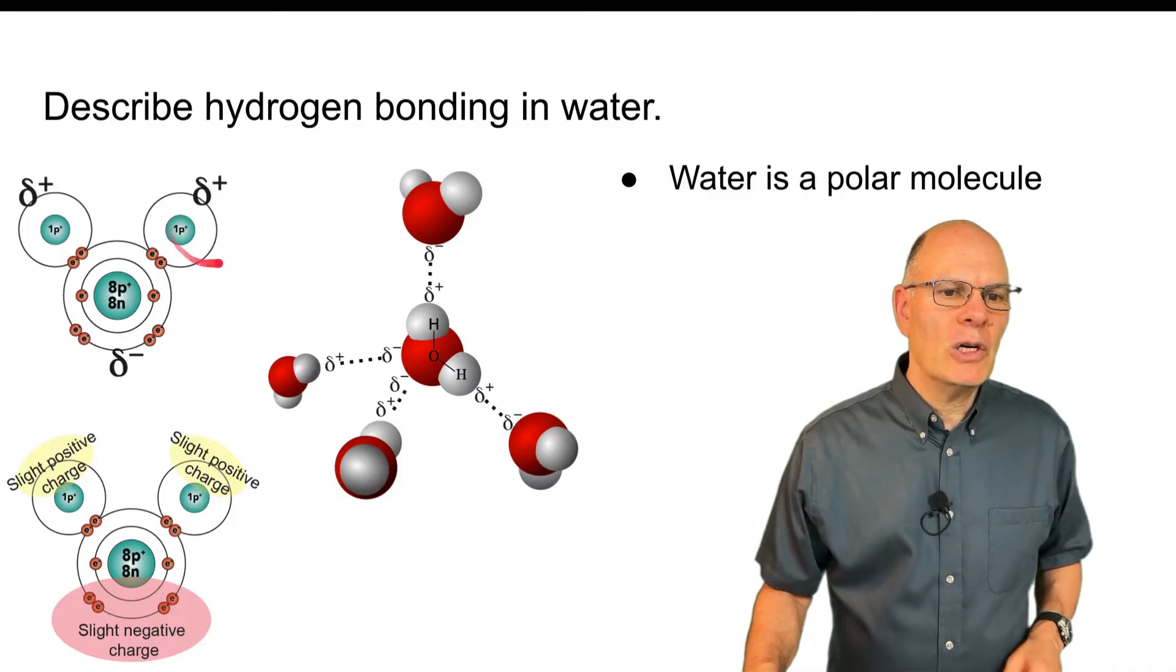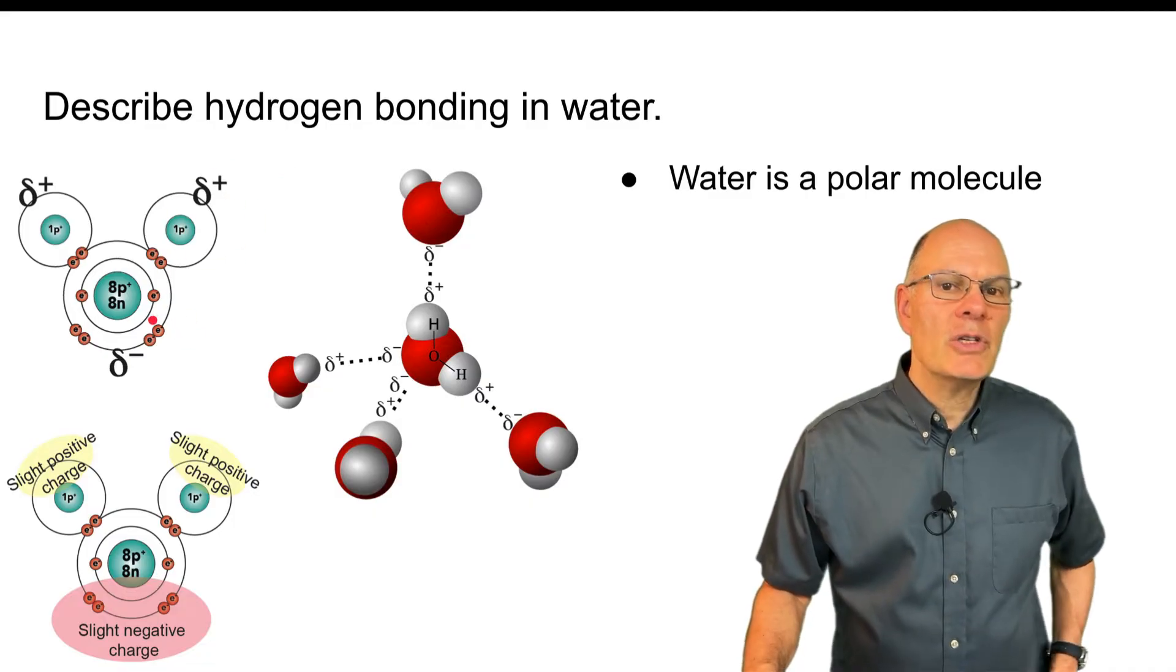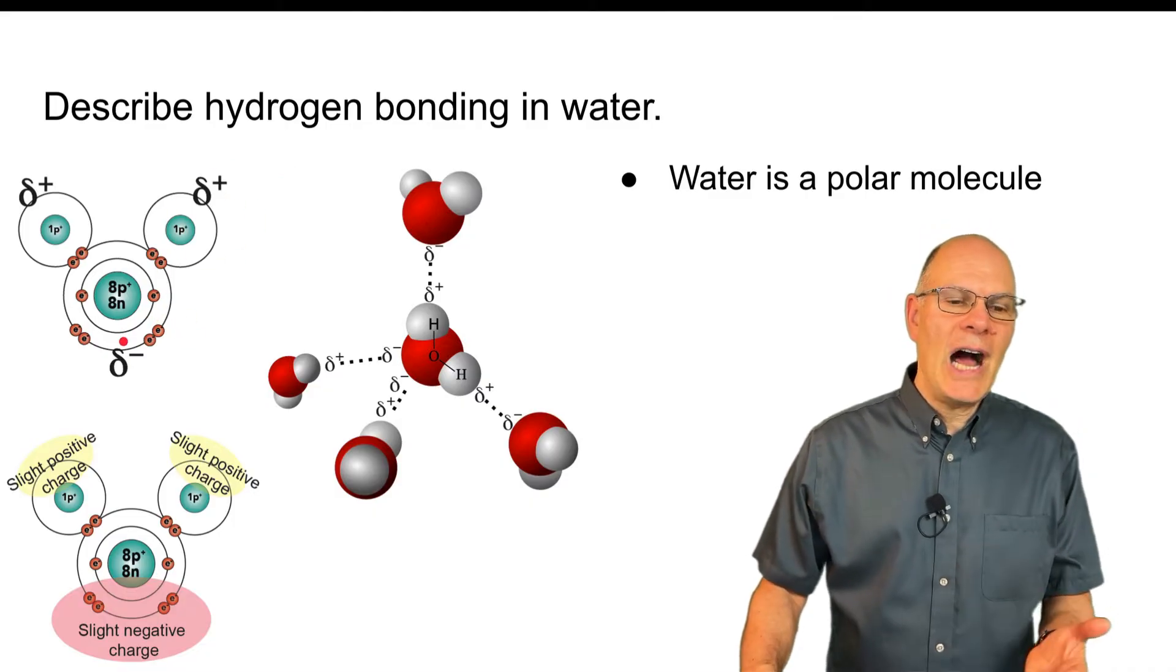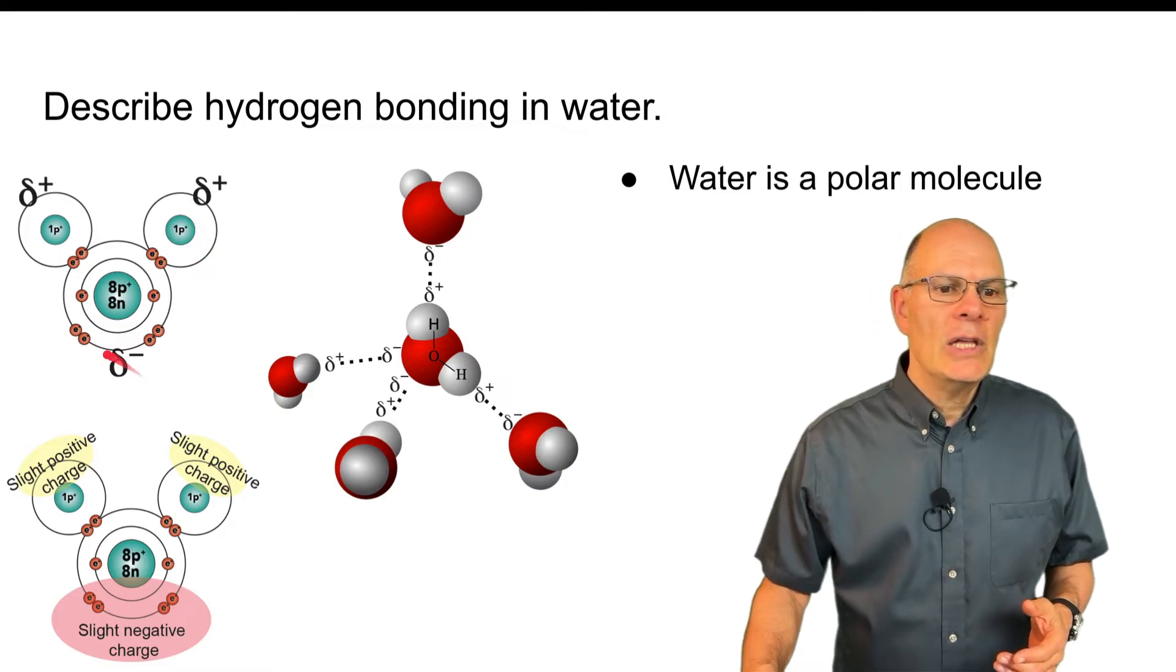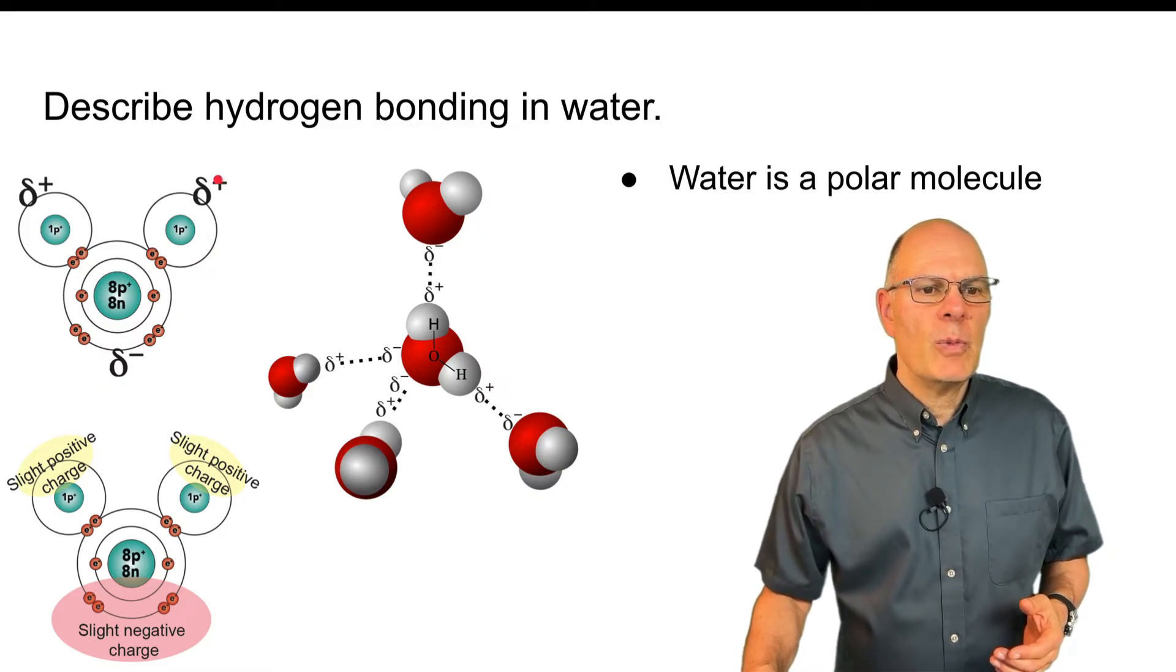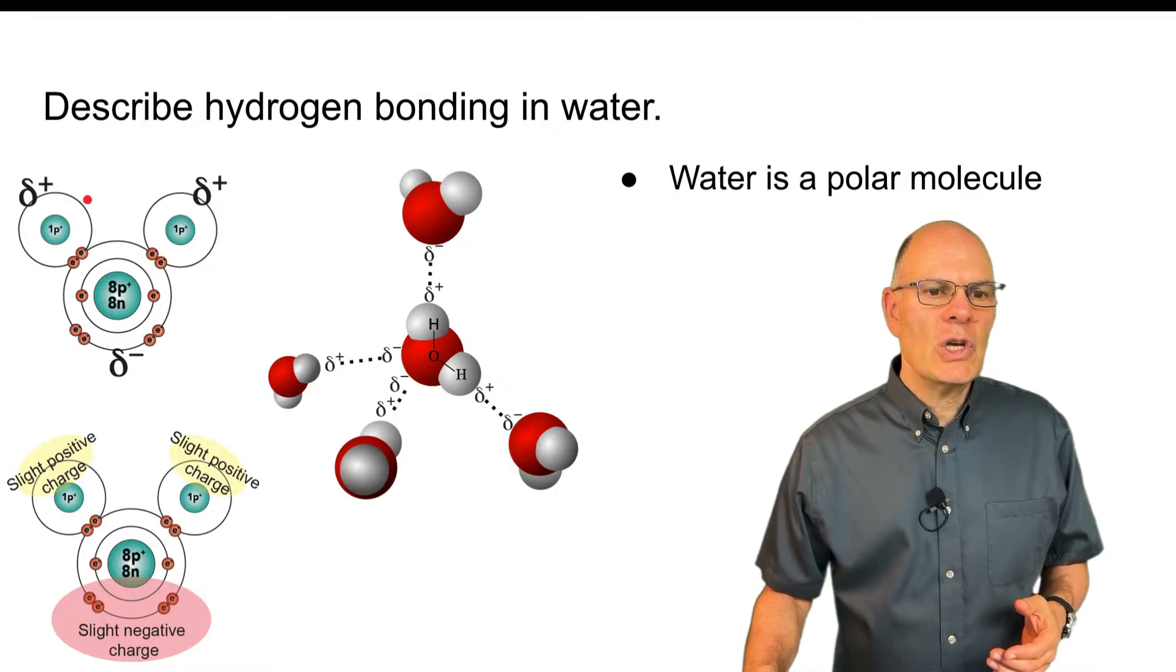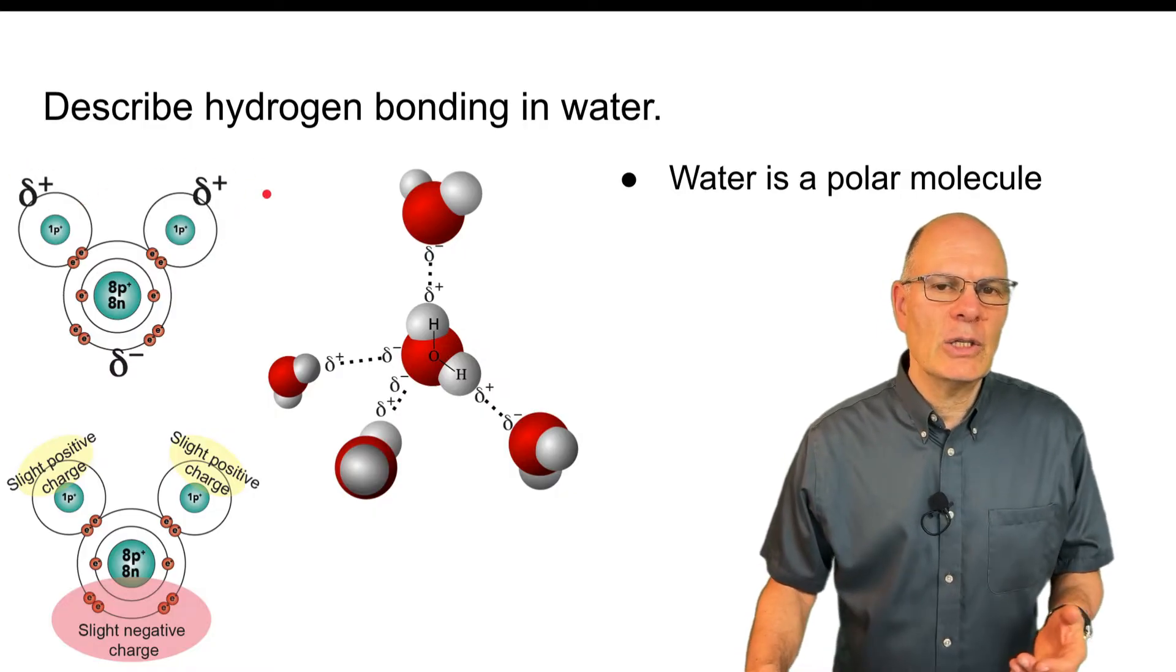First thing to note is that water is a polar molecule. There's unequal electron sharing between oxygen and hydrogen. And so there's a partial negative region over here. There's partial positive regions over here, delta negative, delta positive.